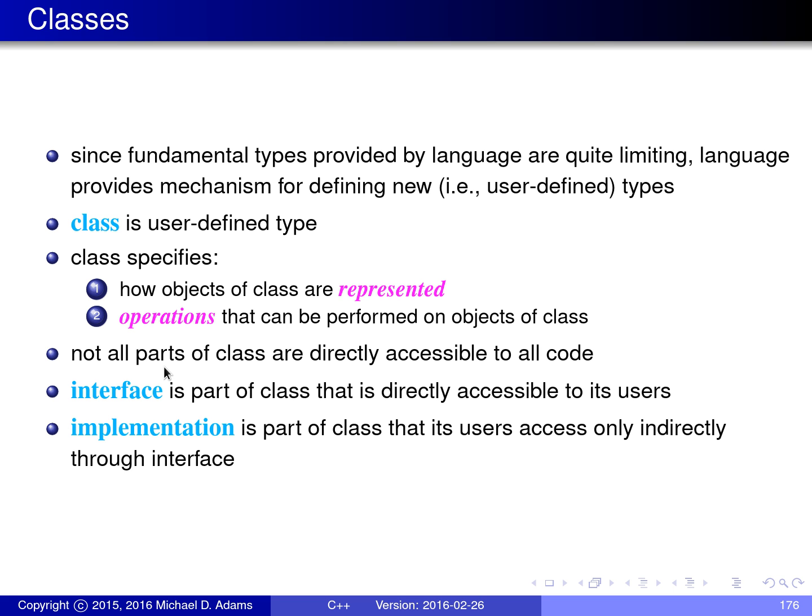Not all parts of the class are directly accessible to all code, and I want to introduce a few terms that relate to this notion. The first is the notion of an interface — the part of the class that's directly accessible to its users. For example, if you had a random number generator class, part of the interface would probably be an operation that says: give me the next random number in the sequence produced by this random number generator. In order to do its work, the function that computes the next random number implements some algorithm which relies on some internal state in the random number generator class. This internal state is part of the implementation of the class — something that users of the class don't see directly.